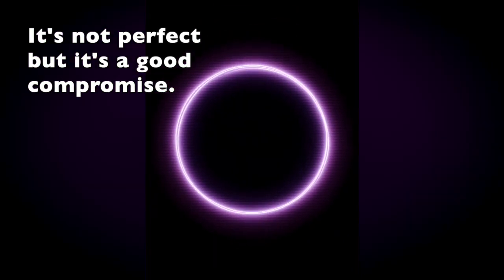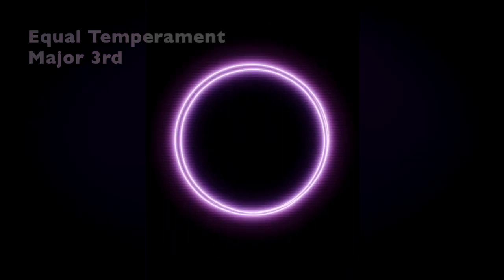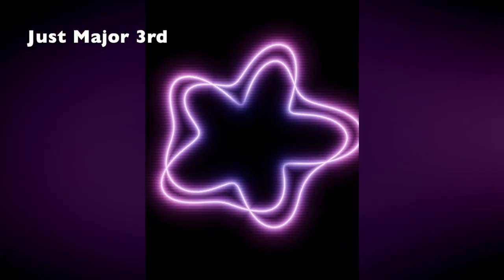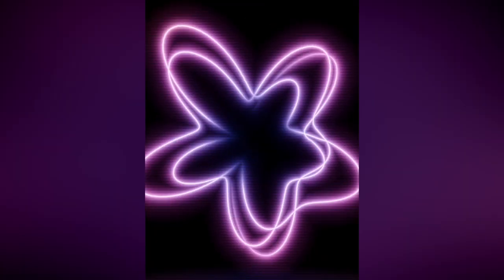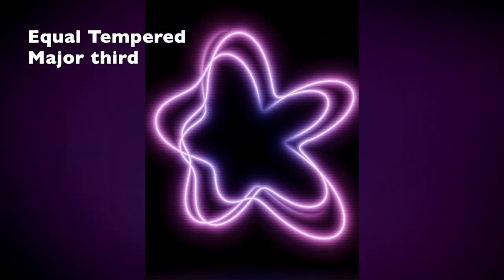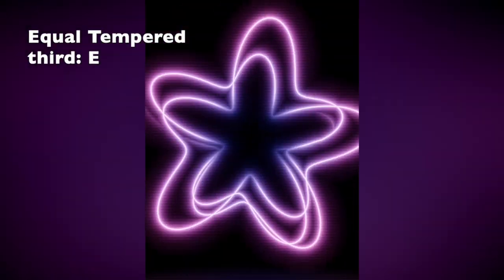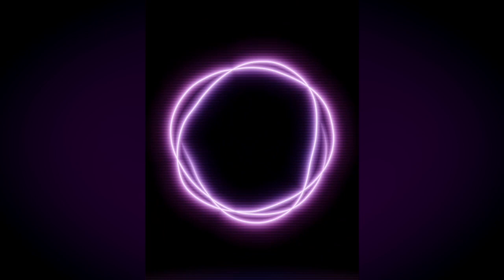Here's the major third, C and E, in equal temperament. And here's the same major third in just intonation. Here's the equal temperament major third again. When we play the E by itself, we can see that it's more than 13 cents sharper than the just interval. We'll now play through all of the intervals in the equal temperament C major scale one last time to see how they compare against the just intonation that HelixTuner is visualizing.